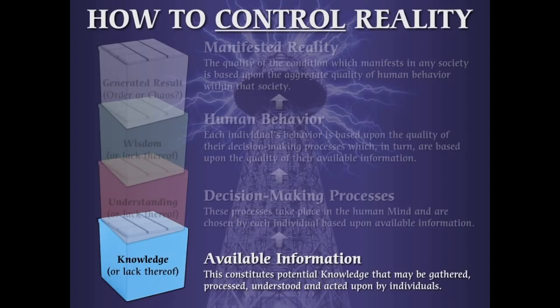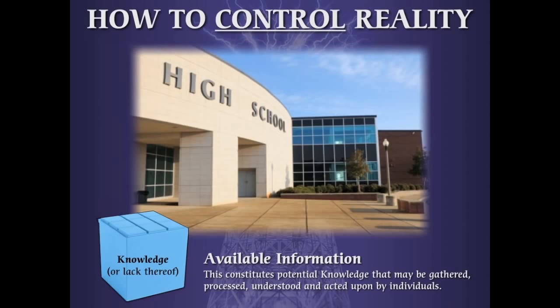We're going to look at how Tesla's name was actually removed from education, from schools. Because if you're going to control available information, you have to have some level of control over educational institutions that are teaching children. The best place, if you were of a mindset to control what is going to be taught to our children, would be to control the books. And when you control the books — the available information — you are controlling the answer to this question in the minds of children: what is possible? The imagination becomes stifled at that point.